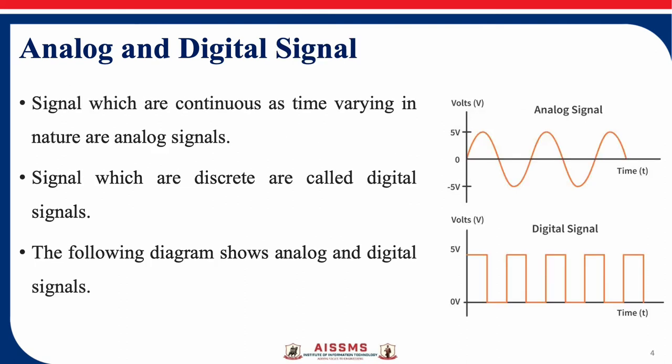Next is analog and digital signals. Similarly to data, a signal can be analog or digital. An analog signal can have an infinite number of values in a given range. On the other hand, a digital signal has a limited number of values in a given range. Signals that are continuous and time-varying in nature are called analog signals, while signals that are discrete are called digital signals. You can see the diagram — these are the analog signals and this is the digital one.